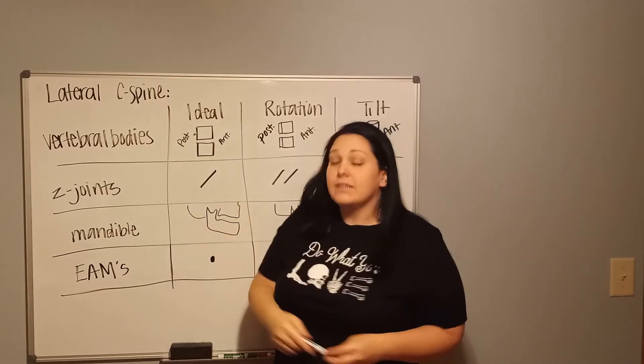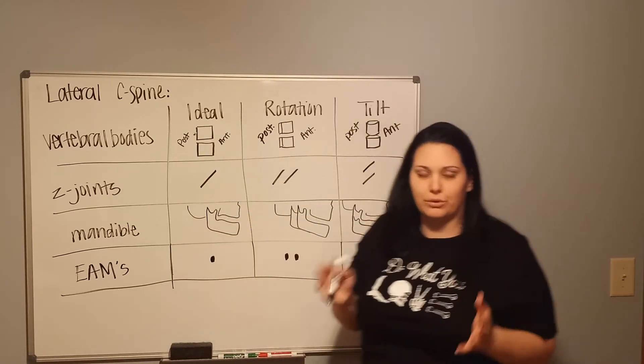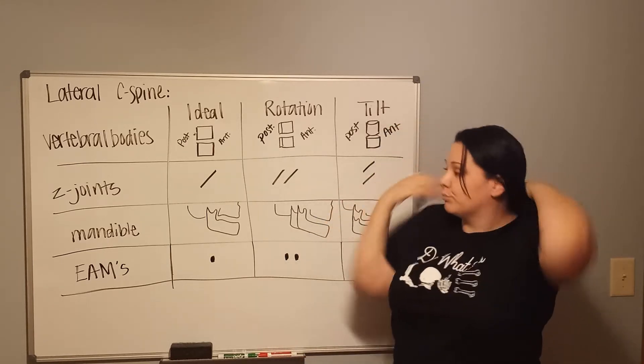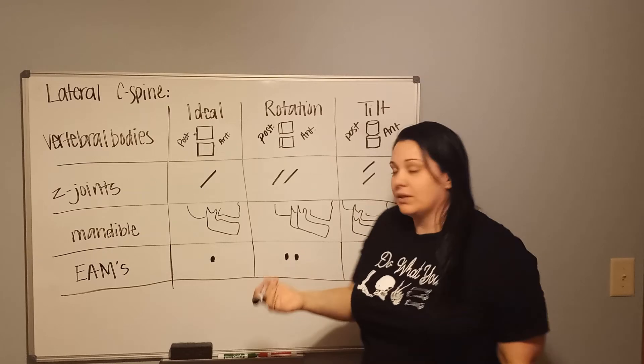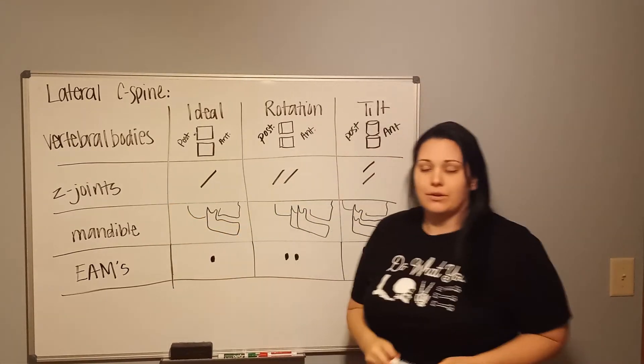Now we're going to say that the vertebral bodies you feel kind of okay with what they're looking like, but you're not totally sold on if this is a rotational problem or if it's a tilt problem. So the next thing you can look at is the Z-joints.